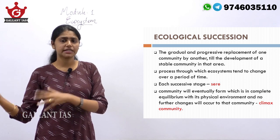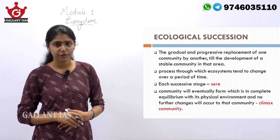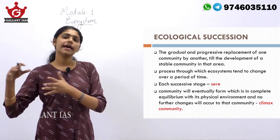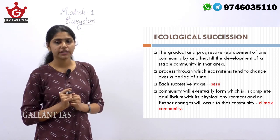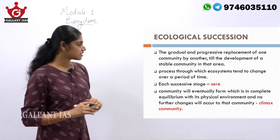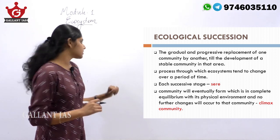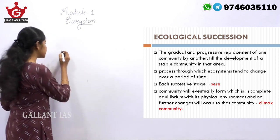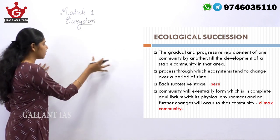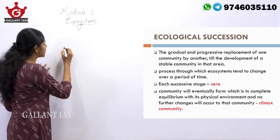At the end of succession, a community is formed that is in equilibrium with the environment. That community is known as the climax community. The successive stages of ecological succession are known as sere.